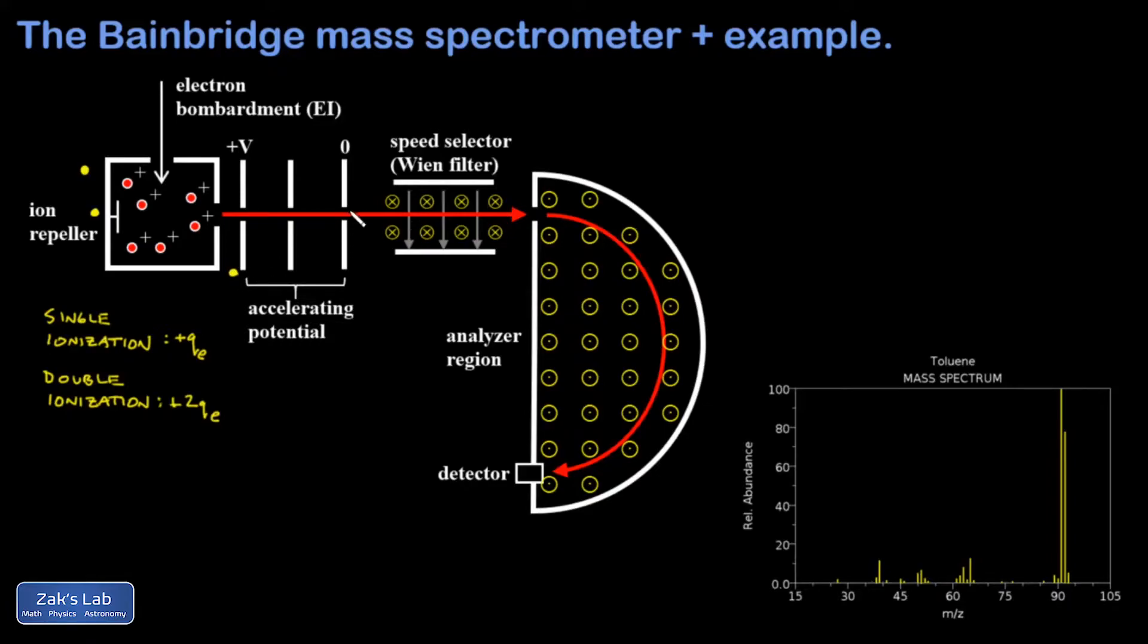Once the positive ions get beyond that plate, they're accelerated from some positive voltage down to zero through the potential difference across these plates. As the ions accelerate through the potential difference, they pass through one or more additional slits in order to narrow the beam.